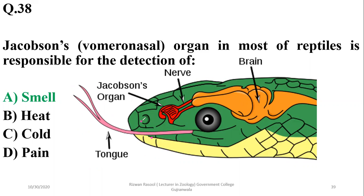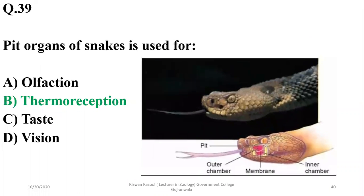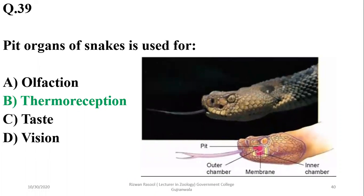Question thirty-eight: pit organs of snakes are used for thermal reception. They are situated below the eyes and used for temperature detection. Most pit vipers rely on this sense for detecting their prey.